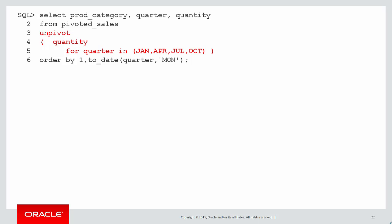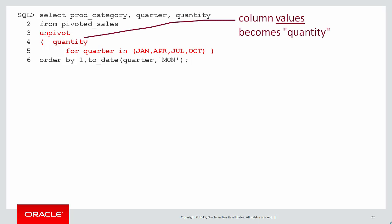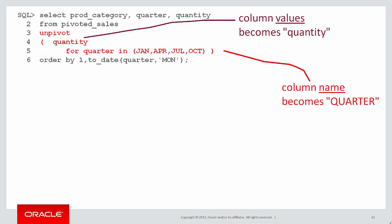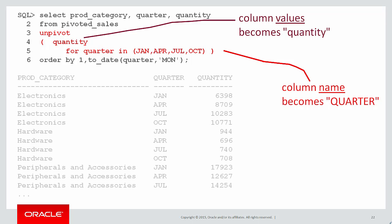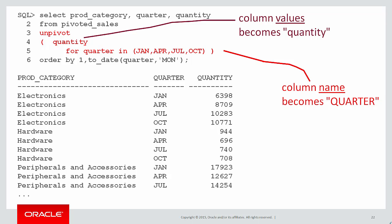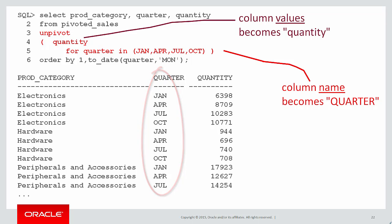We do an unpivot command on line three and then we have this syntax. The column values — the actual data in our count star — that becomes a column called quantity. Then the column name becomes quarter, and the values that go into that column are January, April, July and October — the source columns in our pivoted_sales table. When we run that we can see how the data has been produced. It looks very similar to our very first query — four rows for each product category. You can see the quarter column there contains four values: Jan, APR, Jul and October, and the quantity has been mapped as before.